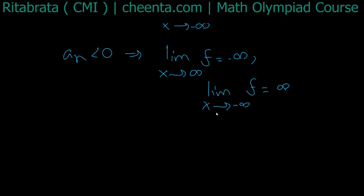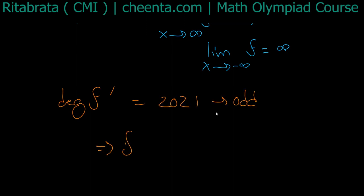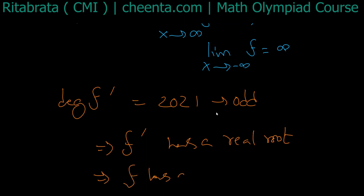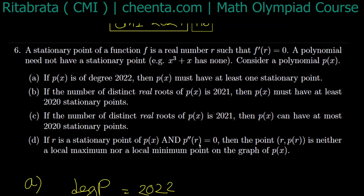So what was our first question? The degree of f' is 2021, which is an odd number. Therefore f' has a real root, which means f has a stationary point. So the first part is true.